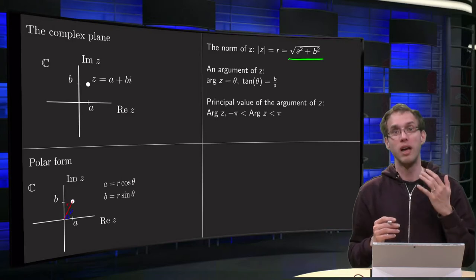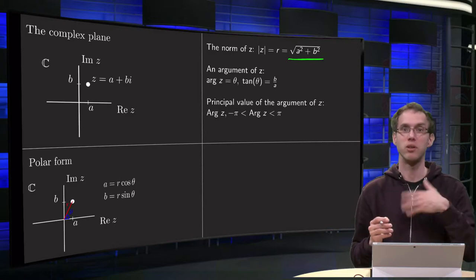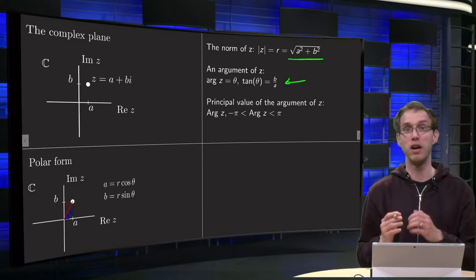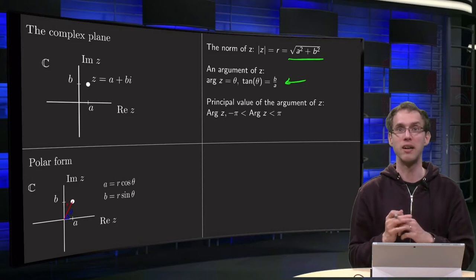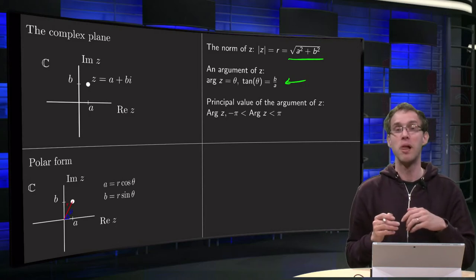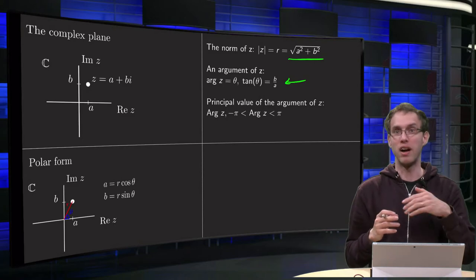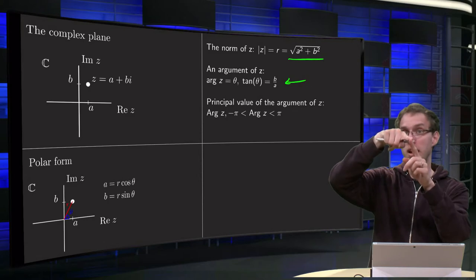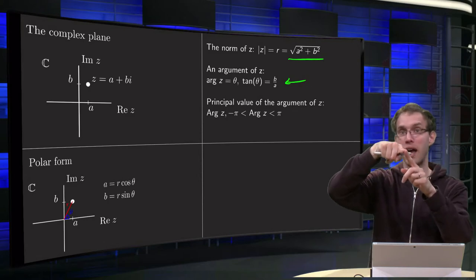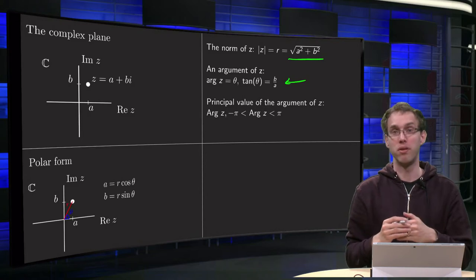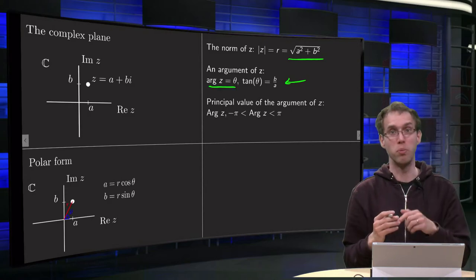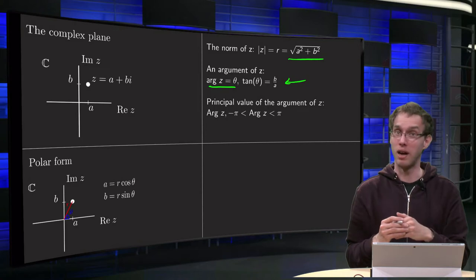We know A equals R cosine theta and B equals R sine theta, so dividing gives the tangent of theta equals B over A. Up to this point it is fine. But we have to be careful, because if we solve this we find the argument of theta, but going 2pi further in the figure puts you at the same angle. So you have an infinite number of correct arguments for any complex number Z. That is why we call theta the argument of Z with small a — you can add any multiple of 2pi you like.